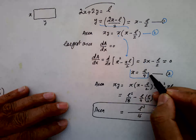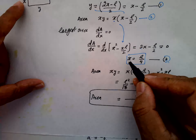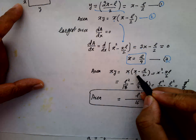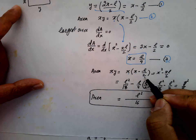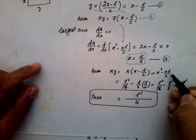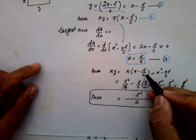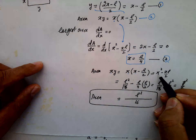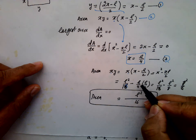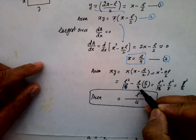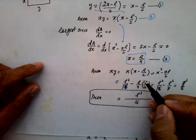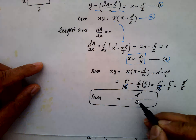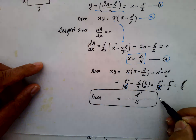That determines the value of Y as well. The area X times Y equals X squared minus XL by 2. Substituting X equals L over 4: L over 16 minus L by 4 times L by 2, giving 16 minus 8 in the denominator. This gives us L squared by 16. This is the maximum area.